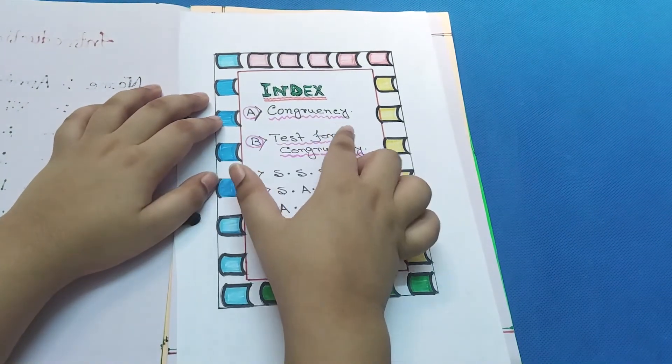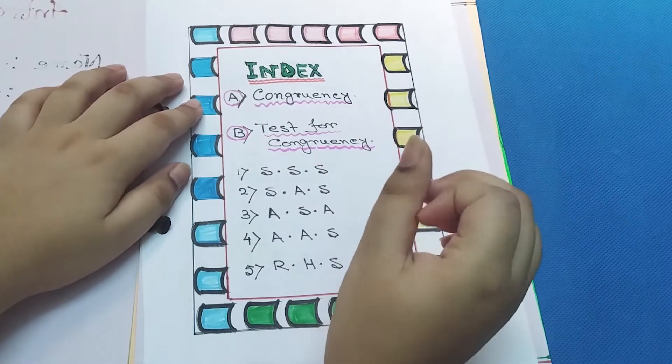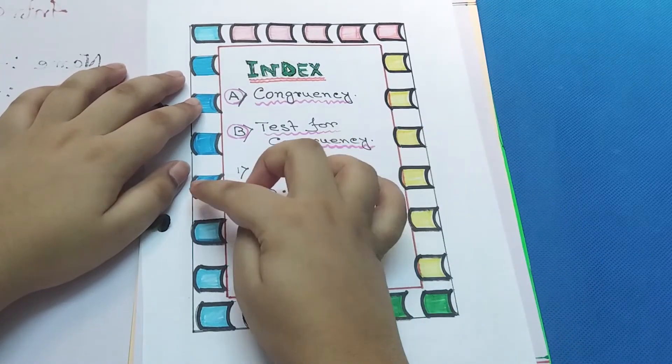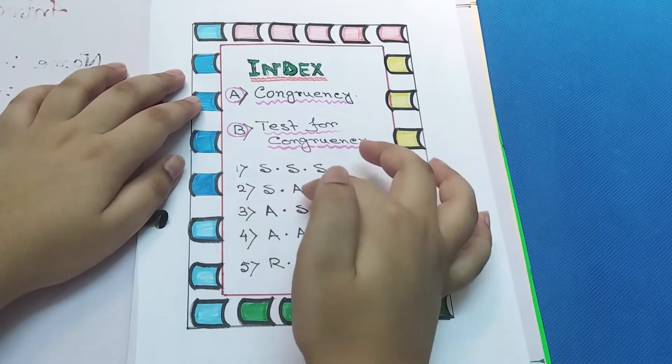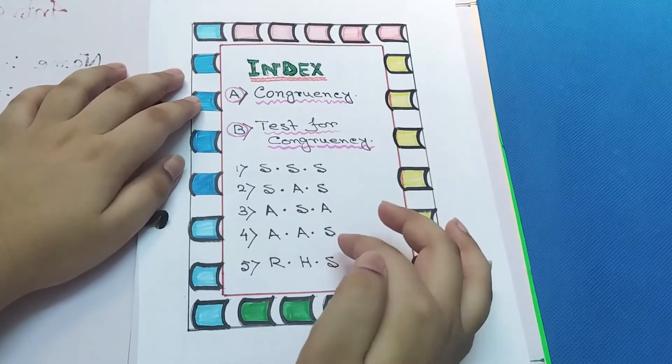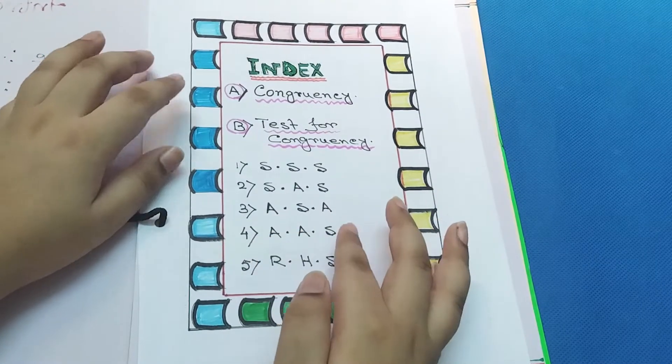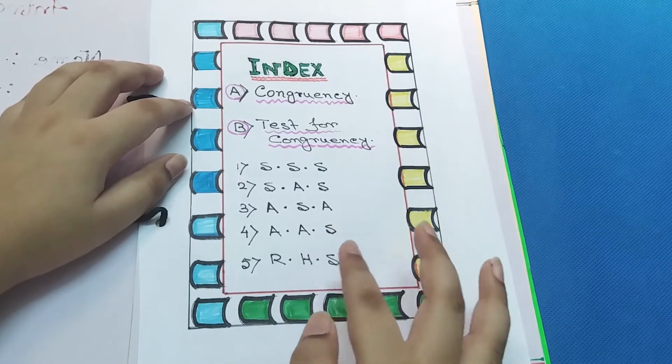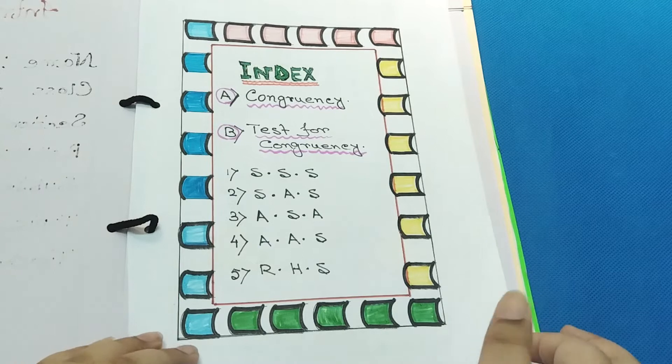The index has A: Congruency and B: Test for Congruency, with pages: Page 1 SSS, number 2 SAS, number 3 ASA, number 4 AAS, and number 5 RHS. Let's change the page.